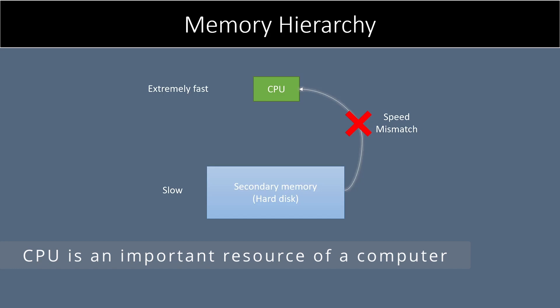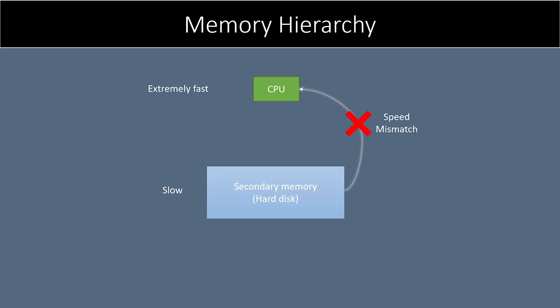The CPU is one of the critical resources of a computer which cannot be kept waiting. In order to fix this and to optimally utilize CPU time, primary memory like RAM is used, which is relatively faster than the hard disk but not as fast as the CPU. Therefore, data and instructions are fetched from the RAM by the CPU, and not from the hard disk directly. RAM in turn takes data and instructions from the hard disk.